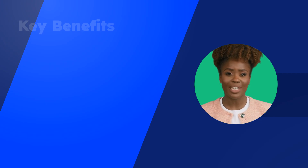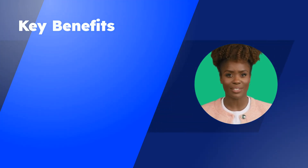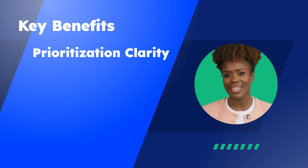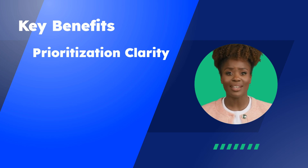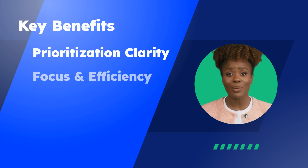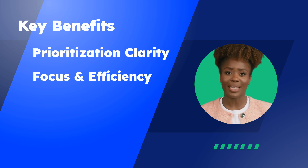Now that we've briefly explored the different ways to visualise alignments in Stratify Pro, let's discuss the key benefits. First is prioritisation clarity. By visualising connections, you can easily identify where alignments are missing or mismatched. This clarity helps you prioritise efforts and resources towards the most impactful connections within your strategy. Next is focus and efficiency. When everyone understands how their work contributes to the bigger picture, it fosters focus and efficiency. Seeing the alignments visually reinforces individual contributions to the overall goals, keeping everyone motivated and working towards the same objectives.